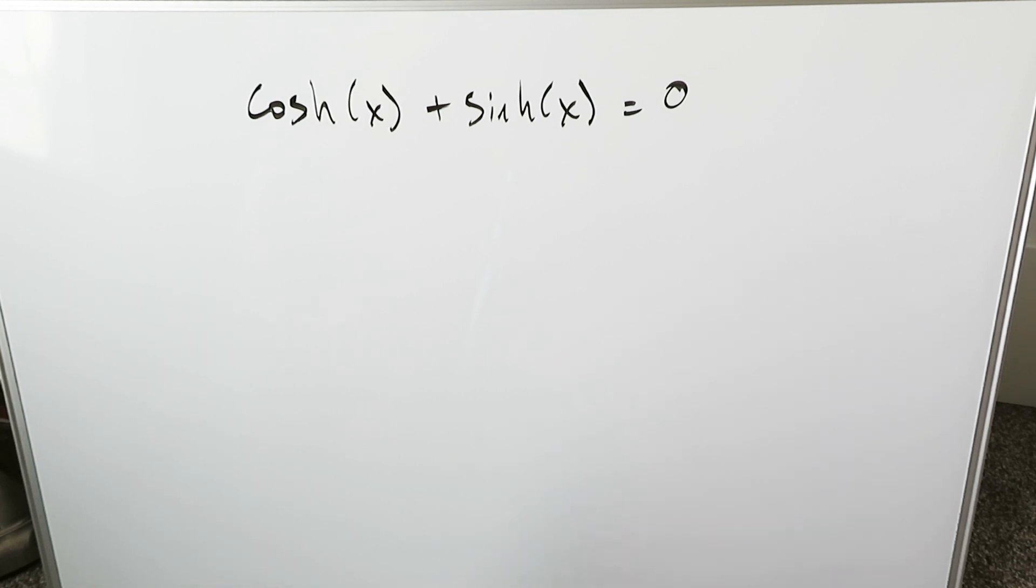The superiority of calculus or algebra is demonstrated in this particular question. We have to solve it in terms of the value of x that satisfies this equation: hyperbolic cosine x plus hyperbolic sine x equals 0. How would you proceed?